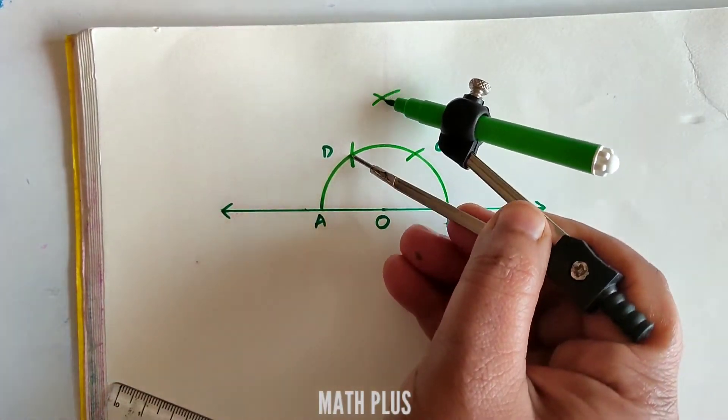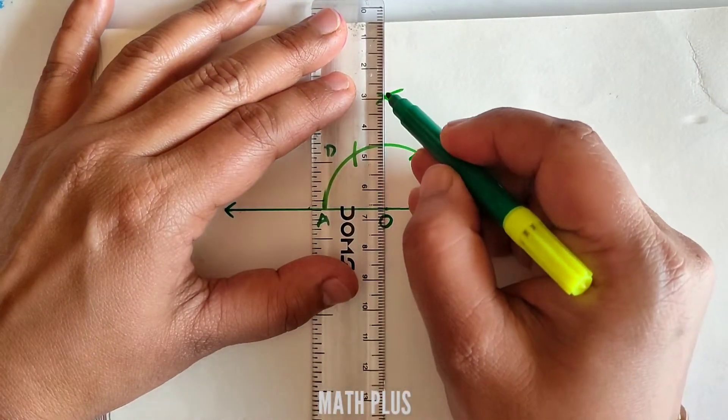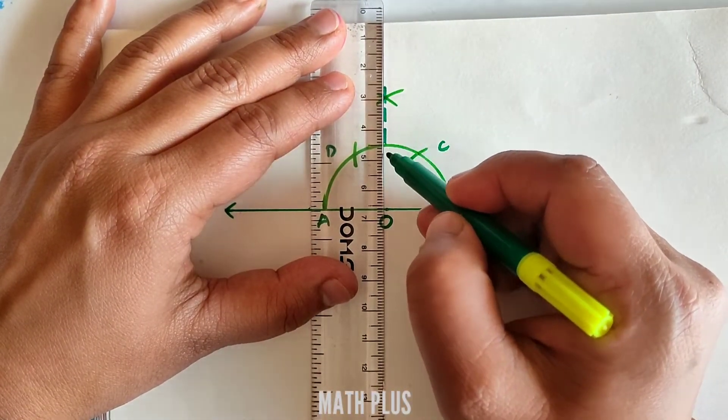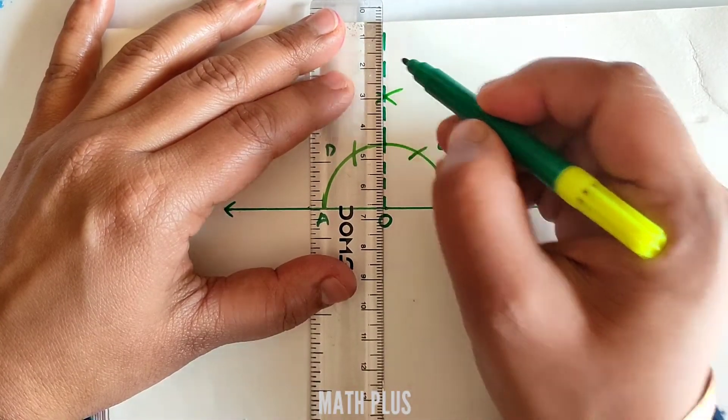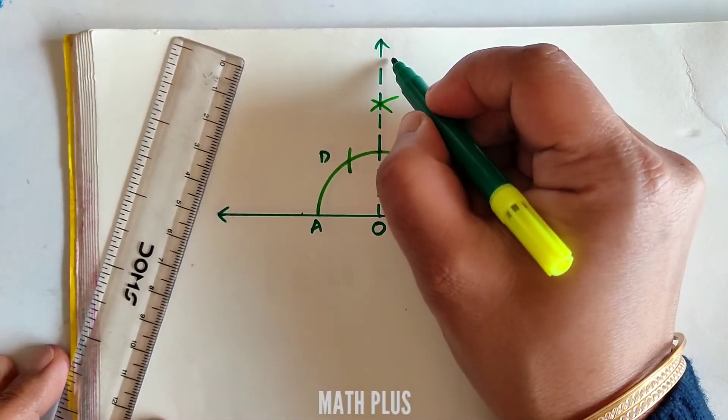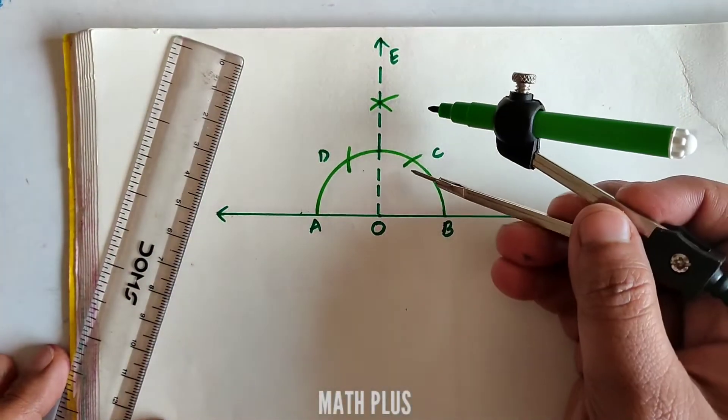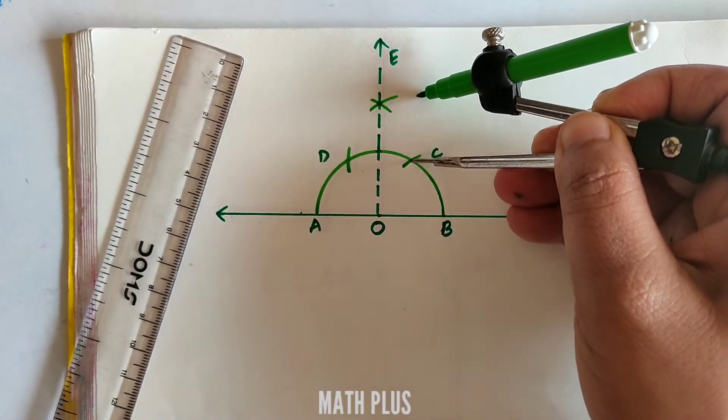Now connect that point of intersection using a dotted line. Basically we are getting an angle of 90 degrees over here. At point C we get an angle of 60 degrees. When we bisect 90 and 60 by using the point C and the point of intersection of OE and the semicircle.